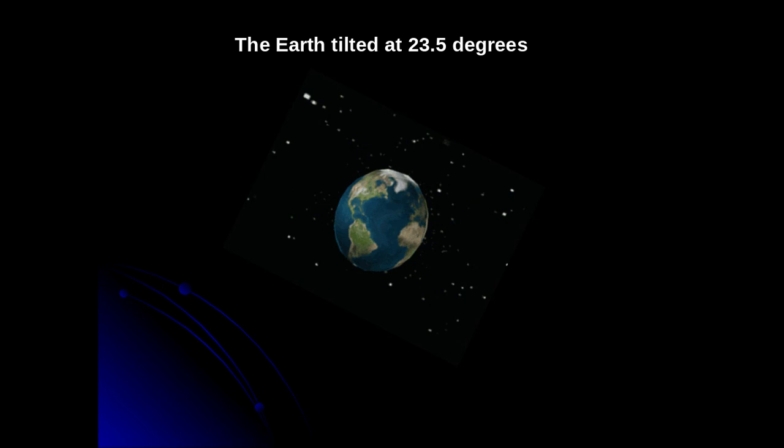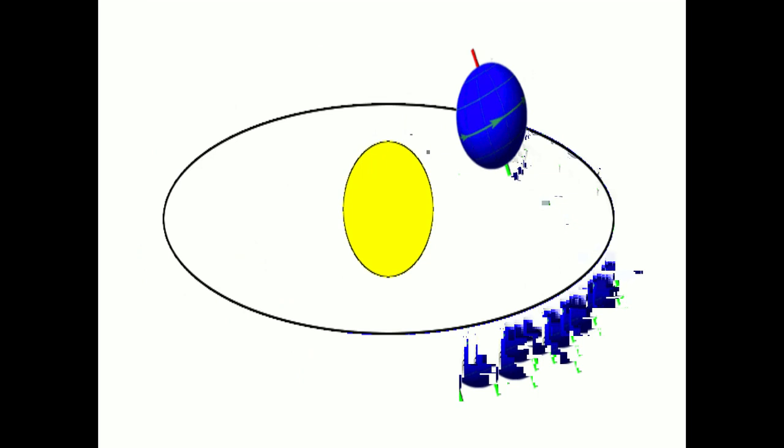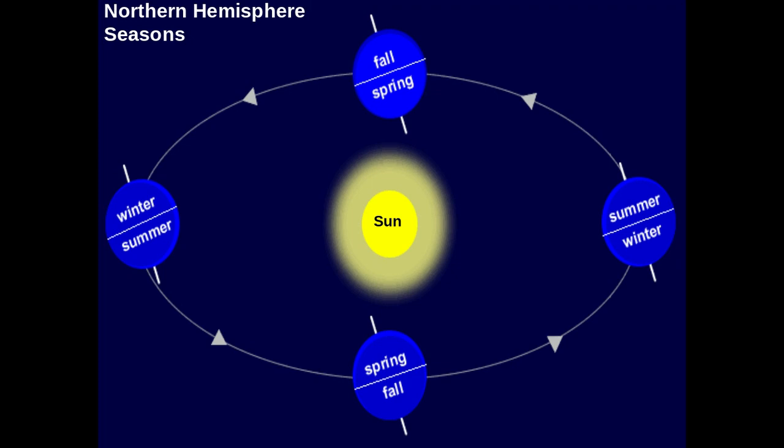This is a picture showing the Earth tilted at 23.5 degrees. This shows you the heliocentric model, with the sun in the center of the solar system. You can see the Earth moving around the sun, demonstrating a one-year period. The Earth's axis is tilted at 23.5 degrees, and that axis stays stationary as the Earth makes its way around the sun. We're going to put the Earth in four different positions and look at where the sunlight or insolation is directly shining on the Earth's surface.